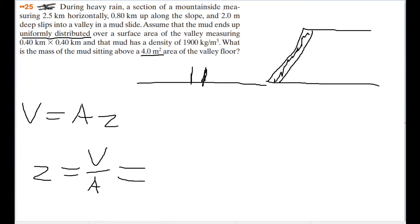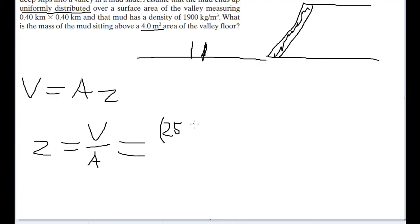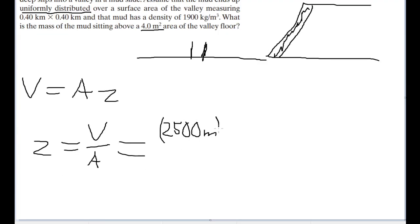As given by the problem, originally, the section of mountainside that's falling is 2.5 kilometers horizontally, the slope itself is 0.8 kilometers long and is 2 meters deep. So converting all of our values into meters, we know the volume is going to be equal to the horizontal distance times the height times the depth. So for volume, I'll write this as 2,500 meters times 800 meters times 2 meters, which we're given as is.